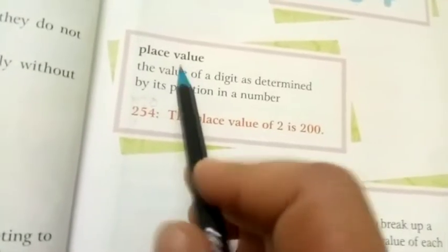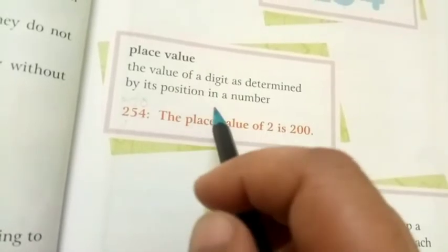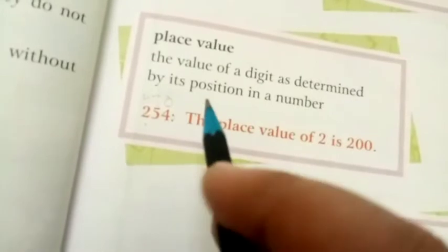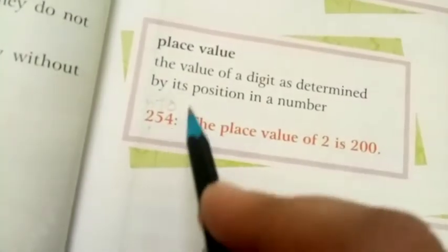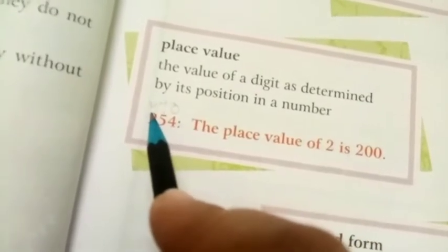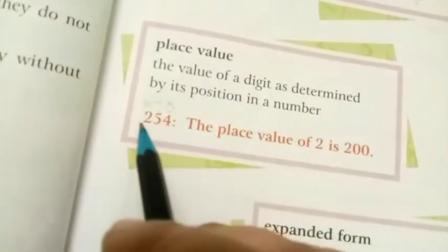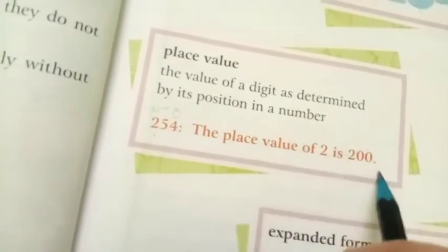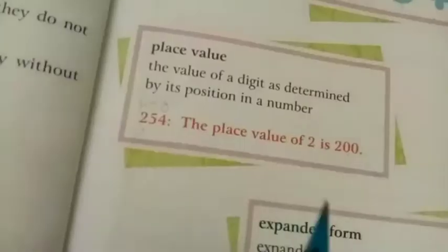You are going to learn place value. Place value is the value of a digit as determined by its position in a number. From the right side, the first position is ones, the second is tens, and the third is hundreds. So the place value of 2 in 254 is 200, because 2 is in the hundreds position.